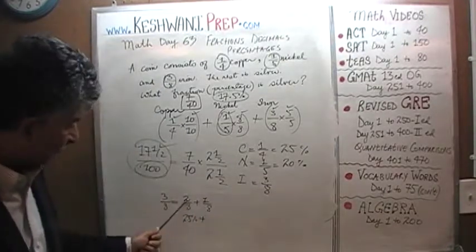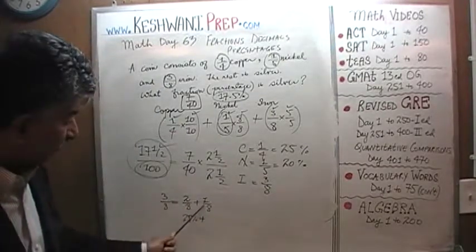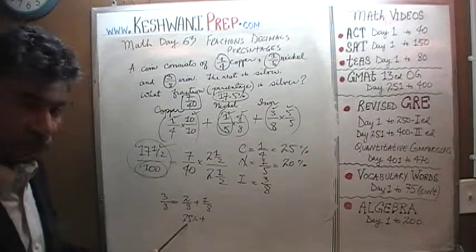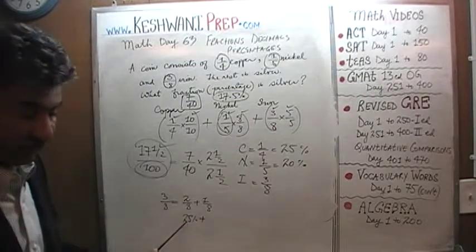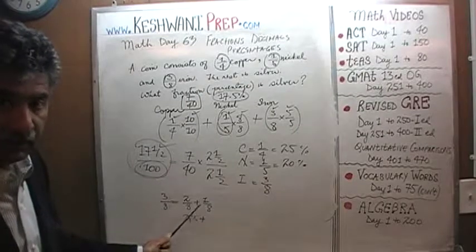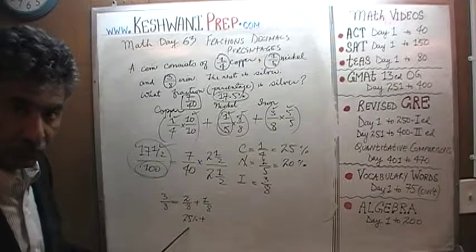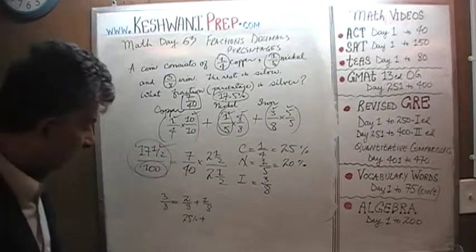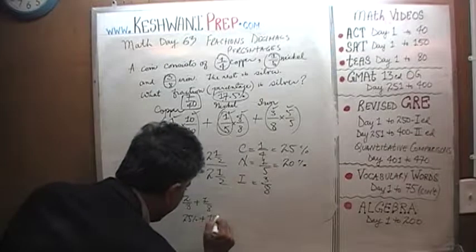1/8 will have to be half of 25%, because 25% is 2/8, which is a quarter. Half of 25% would have to be 1/8. Half of 24 is 12, therefore half of 25 is 12.5%.